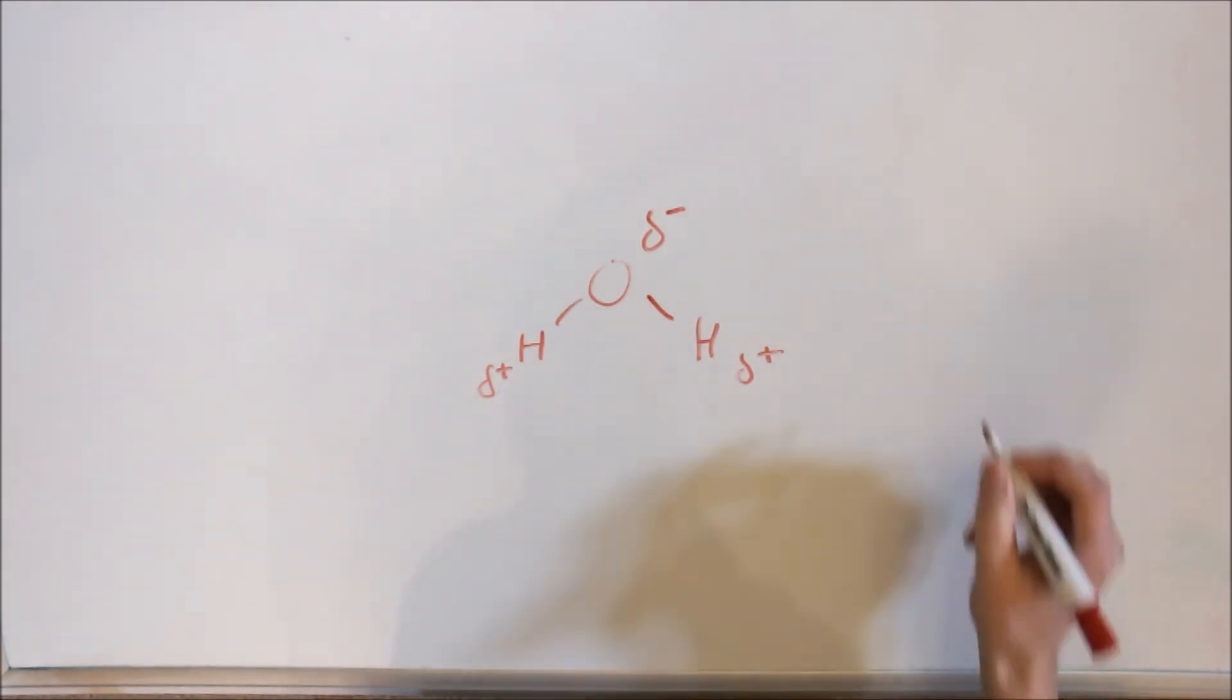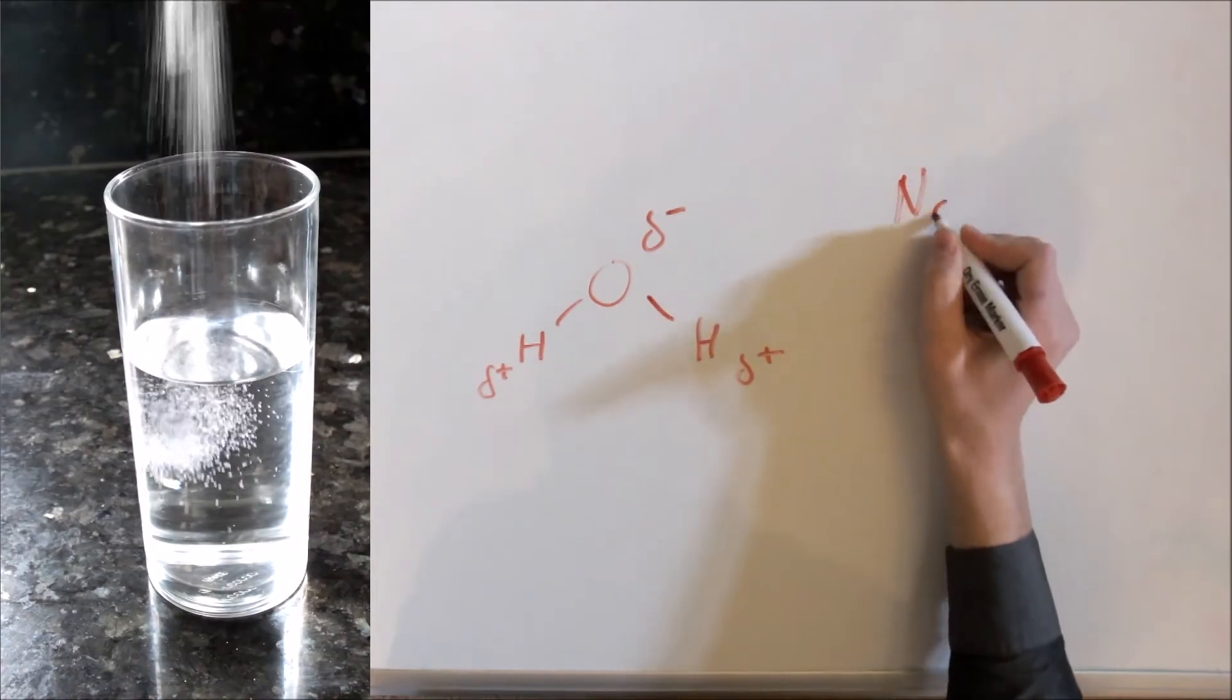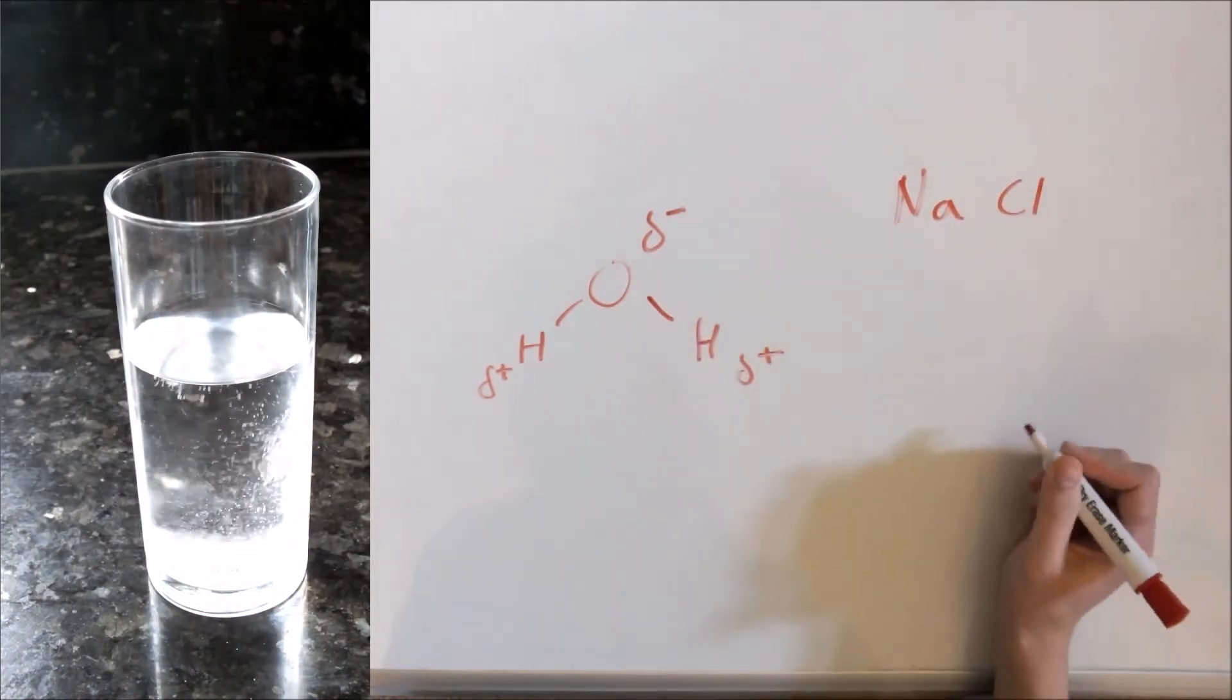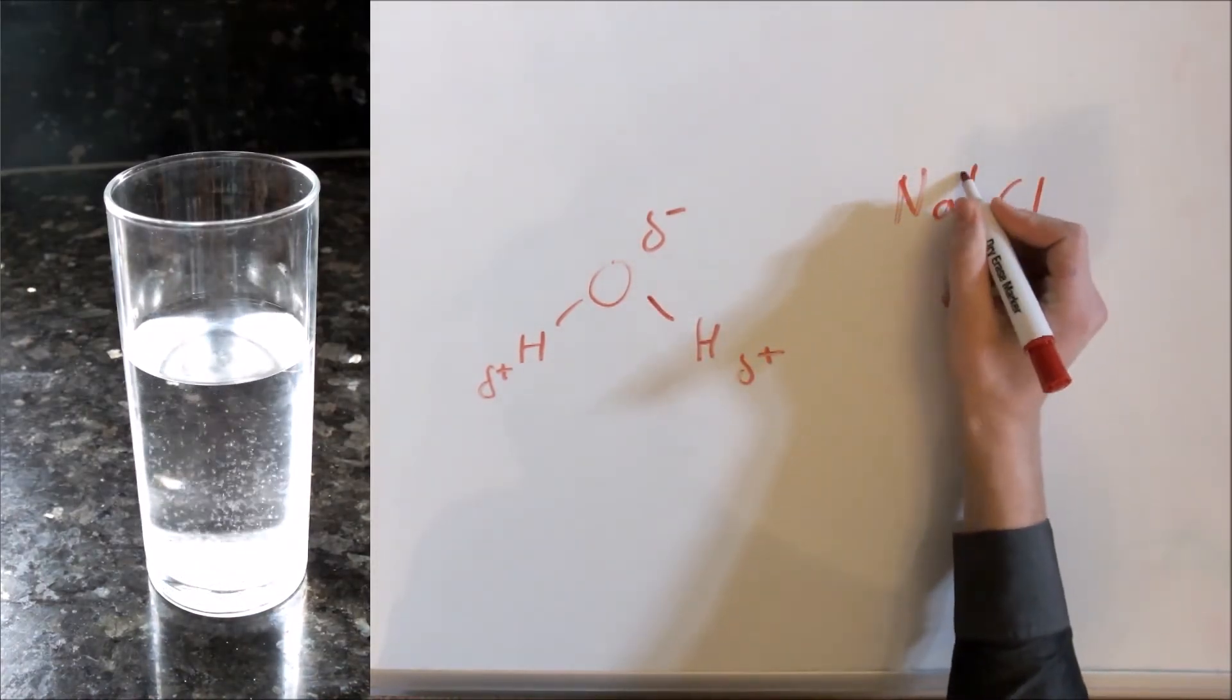An example of this is table salt, NaCl, which has two charged atoms, known as ions.